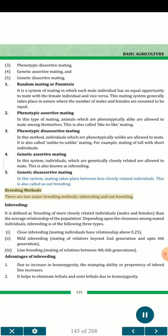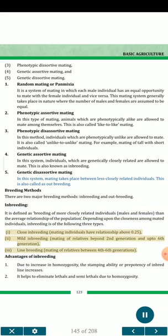Breeding methods. There are two major breeding methods: inbreeding and outbreeding. Inbreeding is defined as breeding of more closely related individuals, males and females, than the average relationship of the population. Depending upon the closeness among mated individuals, inbreeding is of three types: close inbreeding — mating individuals have relationship above 0.25; mild inbreeding — mating of relatives beyond second generation and up to sixth generation; and line breeding — mating of relatives between fourth and sixth generations.